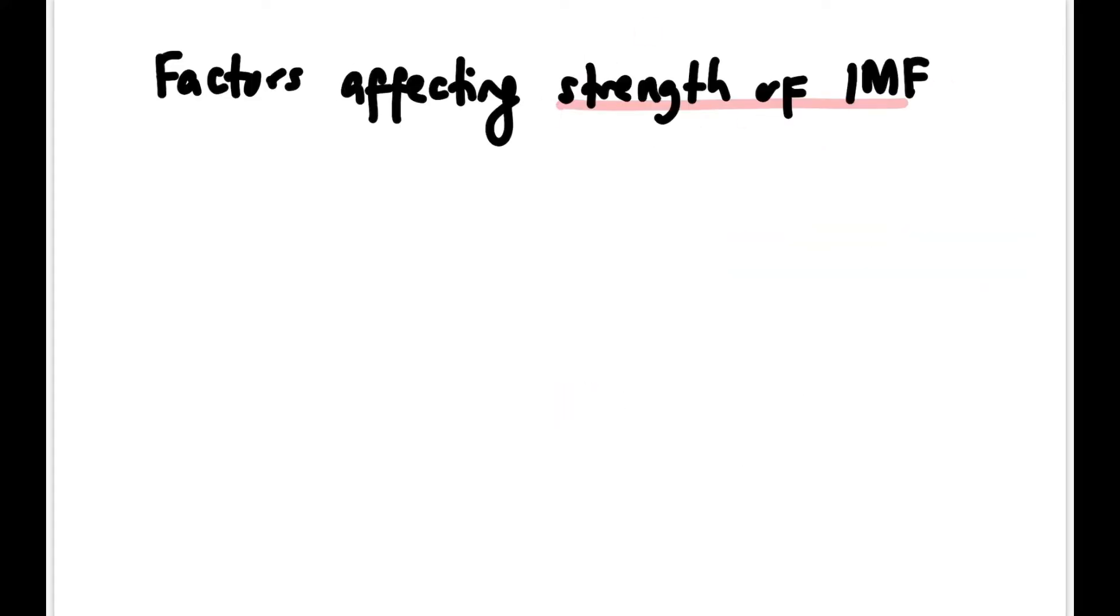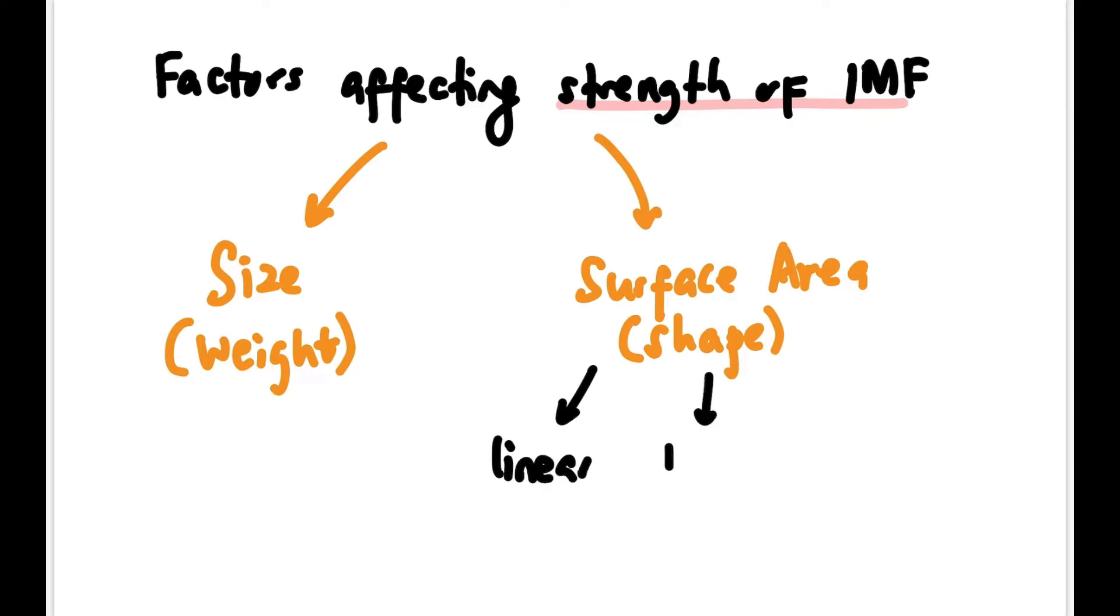Let's have a look at the factors affecting the strength of IMF. The first is size or molecular weight, and the second is surface area of contact, also called shape. Shape is divided into three types: linear, branched, or cyclic. For this topic, we will focus on linear and branched.